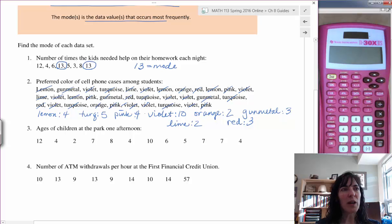So two lime. So violet is definitely the mode with ten color selections from this group of students. Ten makes it the hands-down mode, so that's the mode: violet.